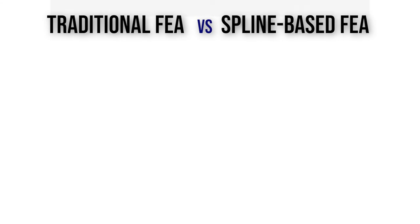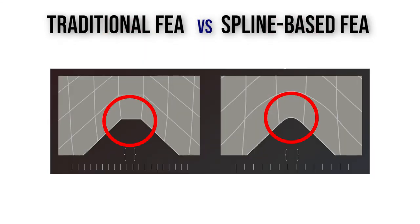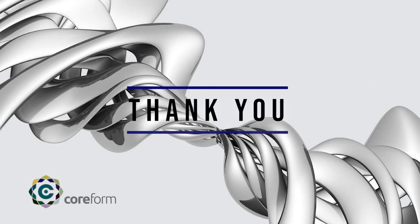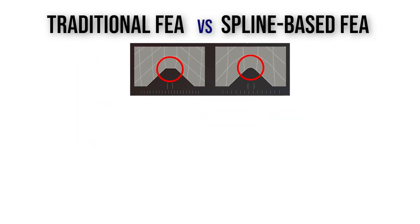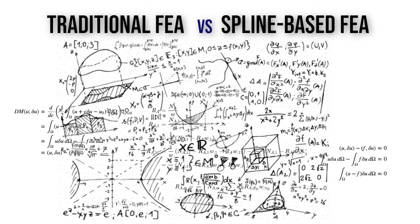Basically, traditional FEA uses straight lines and Spline-Based FEA uses curvy lines, and that's all you need to know. I'm just kidding. The best way to understand the difference is to have a rich understanding of the math and mechanics principles underlying FEA.